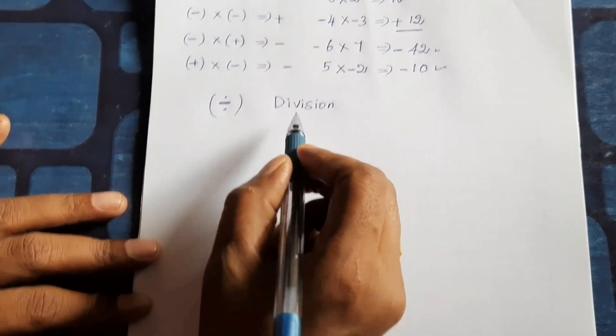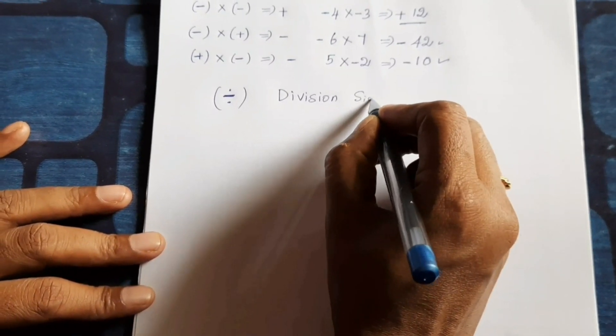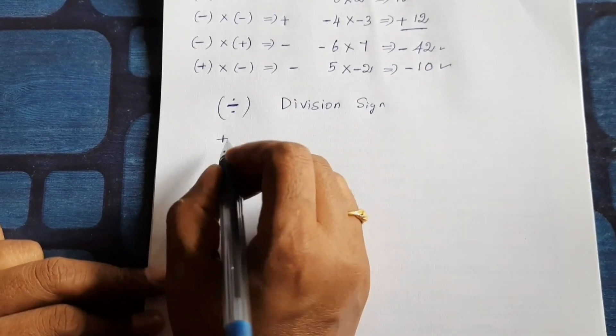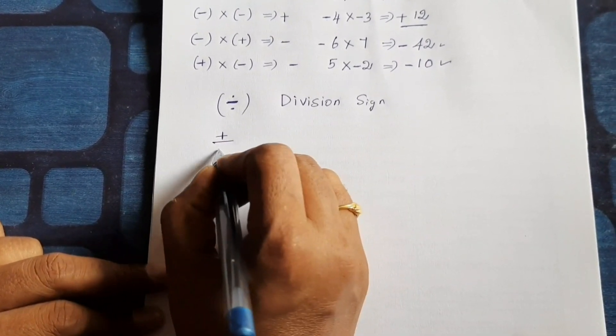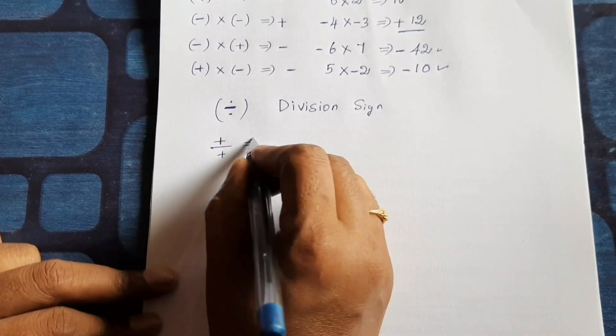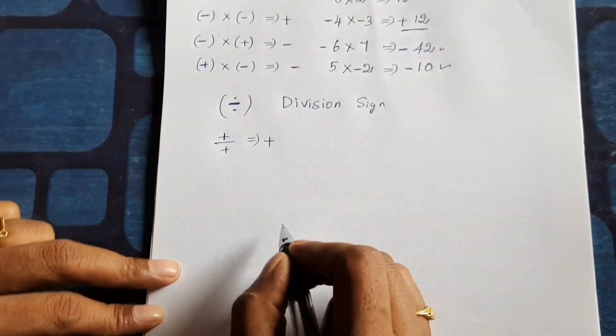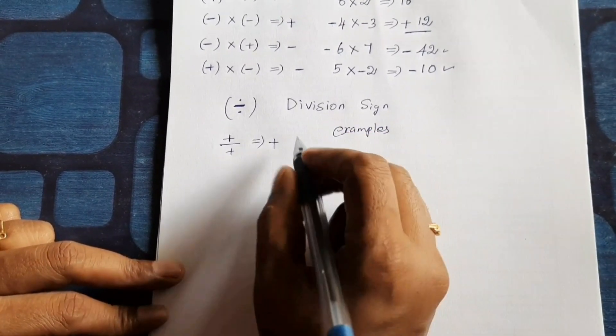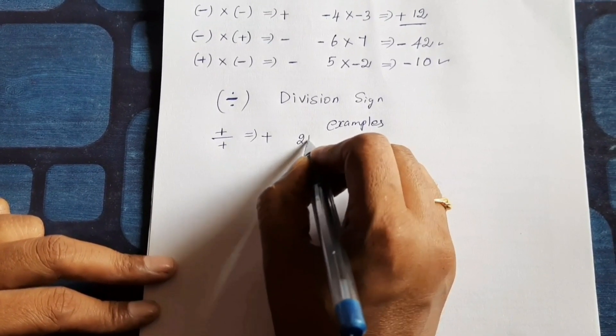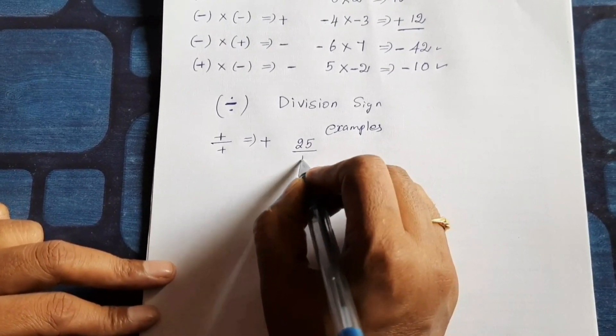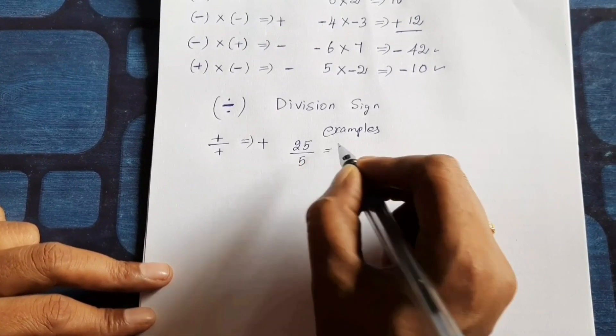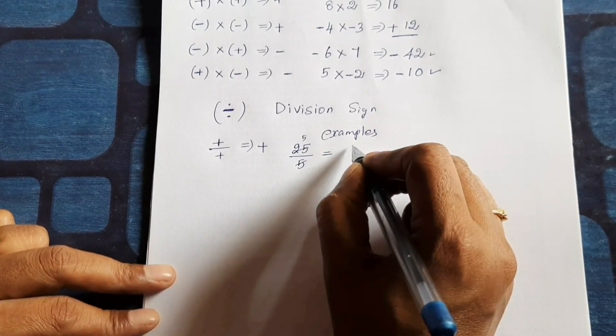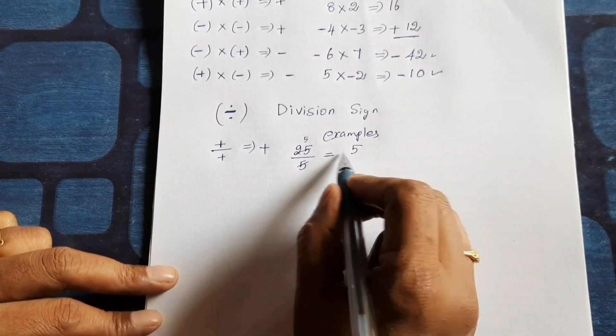Next, division sign. So plus divided by plus gives plus, plus sign. So for example, plus 25 divided by plus 5 equal to 1, 5 or 5, 5 or, so 5, that is positive 5.